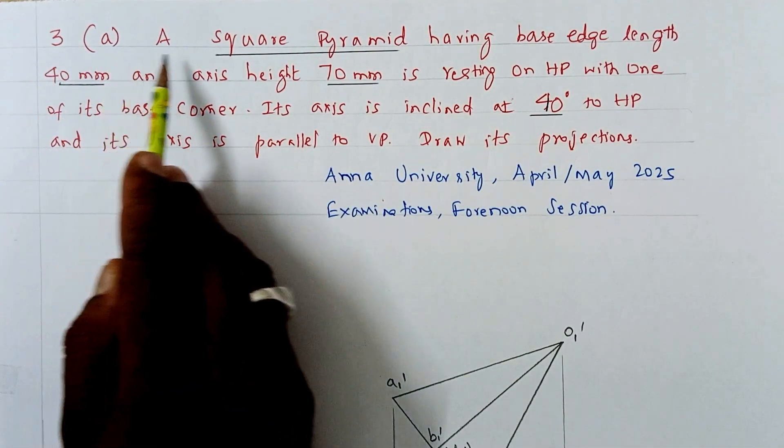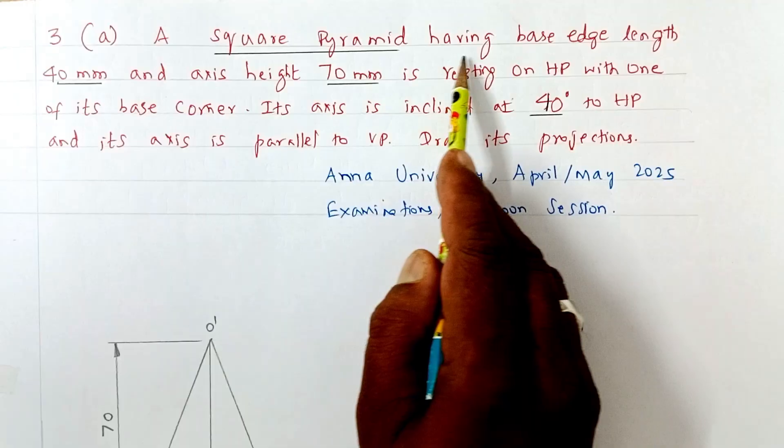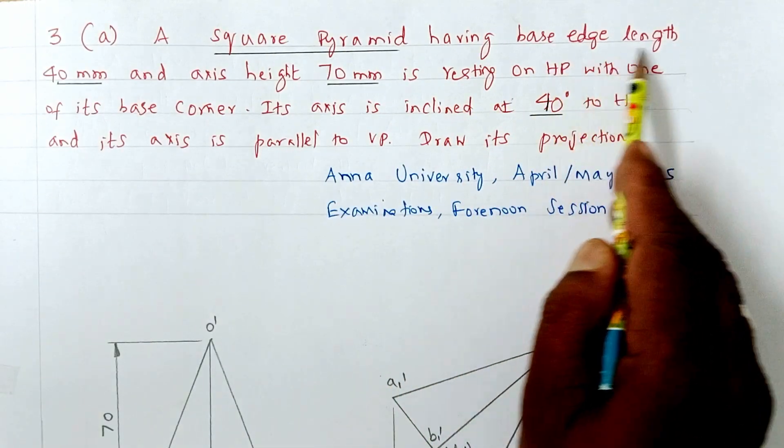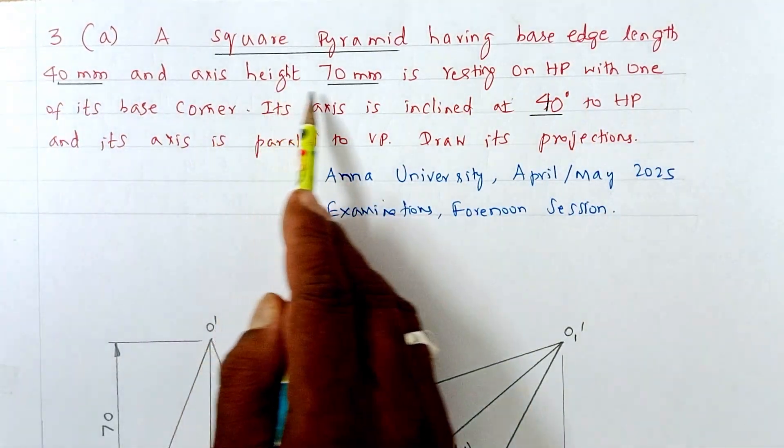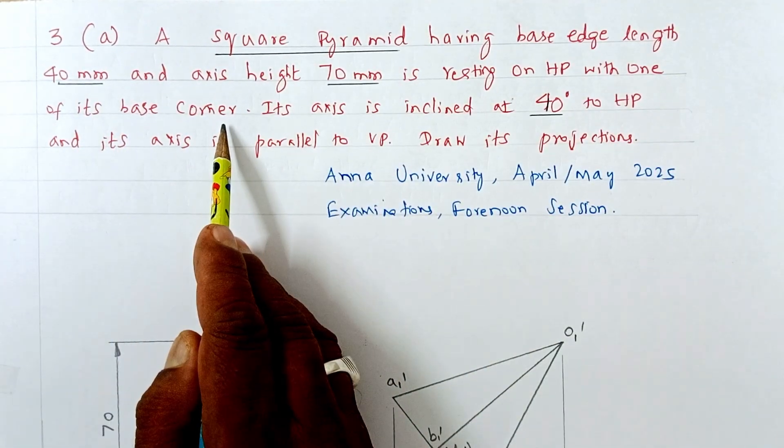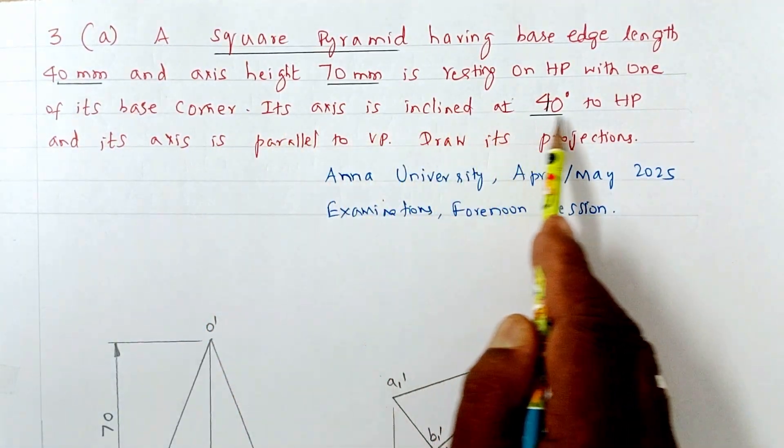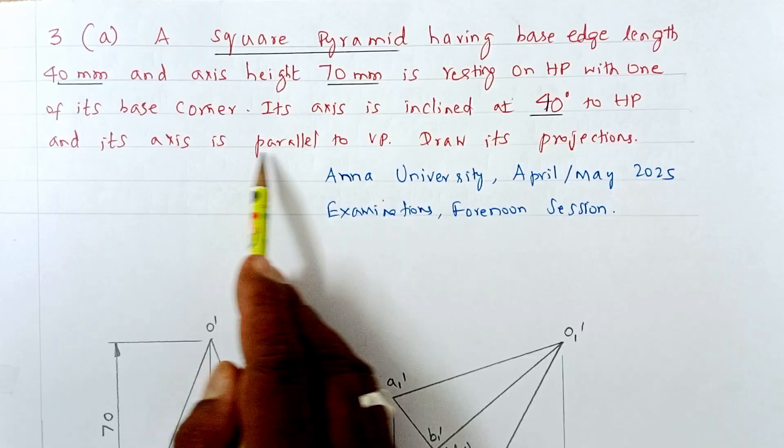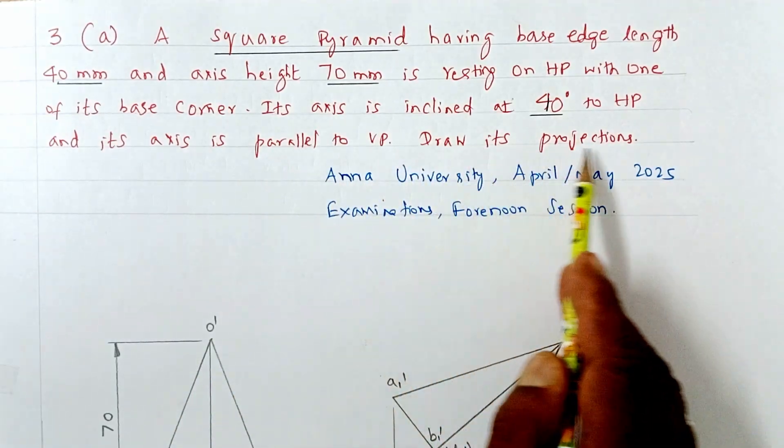Yes, 3A question. A square pyramid having a base edge length 40 mm and axis height 70 mm is resting on HP with one of its base corners. Its axis is inclined at 40 degrees to HP and its axis is parallel to VP. Draw its projections.